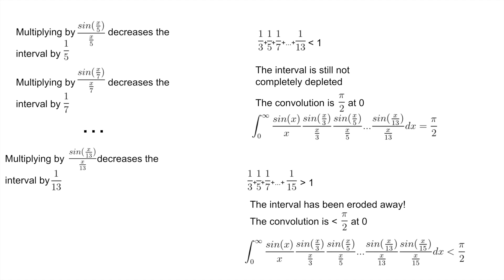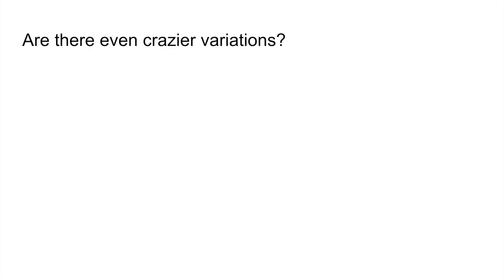Now this is pretty cool. And the natural question is, are there variations of this that are even crazier and that take even more steps until they're not equal to exactly π/2? And it turns out there are. In particular, if we start out with a 2 times cos(x), then it turns out that you have to wait for your sum to get to 2 instead of 1 before you see the behavior where it drops slightly from π/2. And this first happens at 1/3 plus 1/5 plus 1/7, all the way up to plus 1/113.